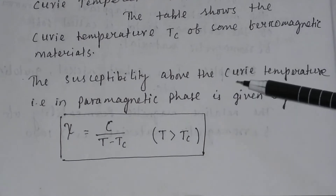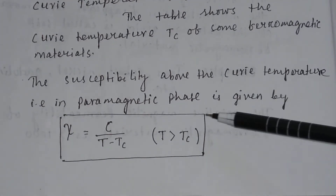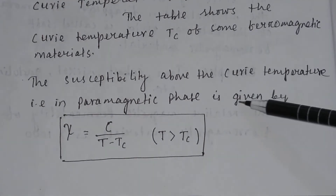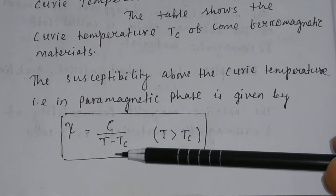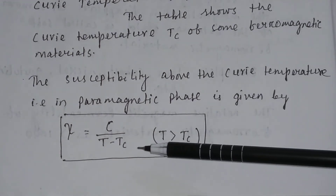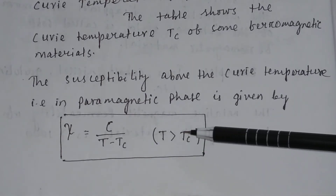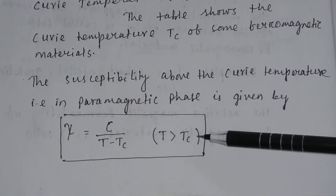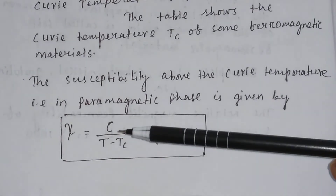The susceptibility above the Curie temperature, that is in the paramagnetic phase, is given by χ = C divided by (T minus TC), where T is greater than TC and C is the Curie constant.